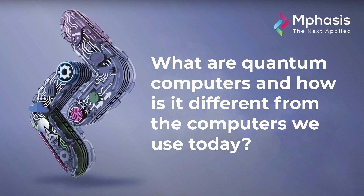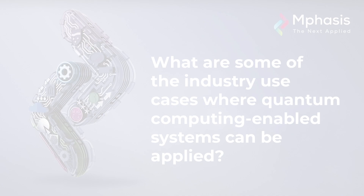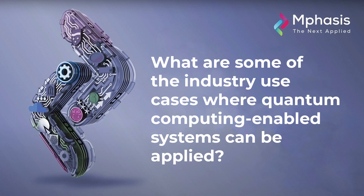So we looked at what quantum computers are and how they are different from the ones we use today. Why don't we delve deep into some of the industry use cases where these new computing systems can be applied? There are applicabilities across multiple different industries, whether it's BFSI, logistics, medtech, manufacturing, chemical engineering, and there are a number of horizontal use cases as well — optimizations, AI, natural systems, cryptography, and many more. So there are both near-term and long-term use cases for quantum computing. Currently, quantum computing is being utilized in conjunction with classical computers, especially on a number of optimization problems.